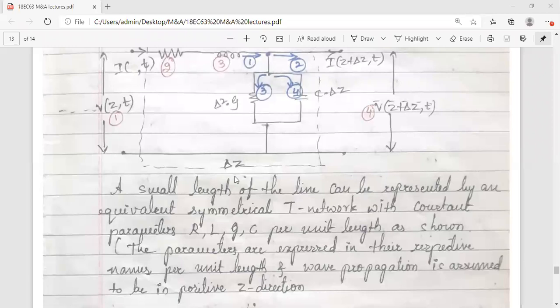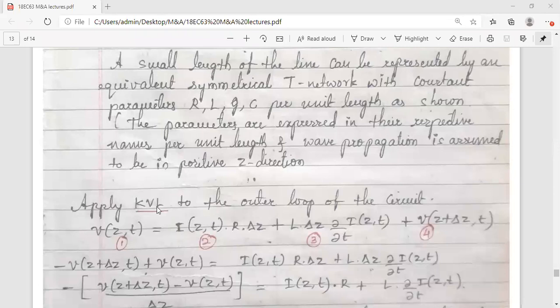A small length of the line can be represented by an equivalent symmetrical T-network. This is a symmetrical T-network with the primary constants R, L, G, C per unit length. Per unit length is very important. The parameters are expressed in their respective names per unit length, and wave propagation is assumed to be in the Z direction.